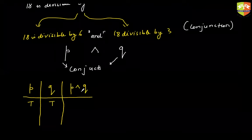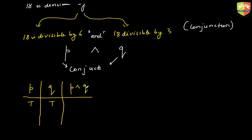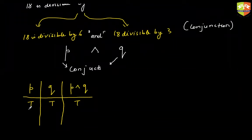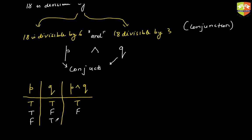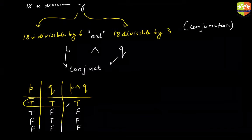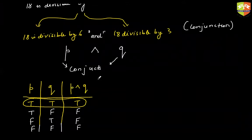If both P and Q are true, then P conjunction Q is also true. If P is true and Q is false, the result is false — for example, '18 is divisible by 6 and 18 is divisible by 5' is false. If P is false and Q is true, it is false. If both are false, it is false. The conjunction is true only when both conjuncts are true.